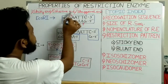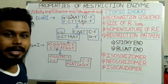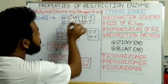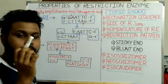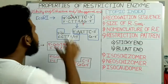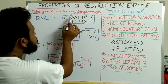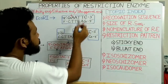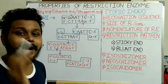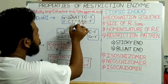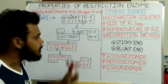Sticky end is also called the cohesive end or staggered end. To explain the sticky end, I will use EcoR1 as an example. This is the particular sequence recognized by EcoR1: 5' GAATTC 3'. After recognizing this particular sequence, EcoR1 cuts the DNA at the phosphodiester bond between two nucleotides at the 5' end of both strands. You can see they cut here and here — this is not a parallel cut, meaning they do not cut in the same position of both strands.